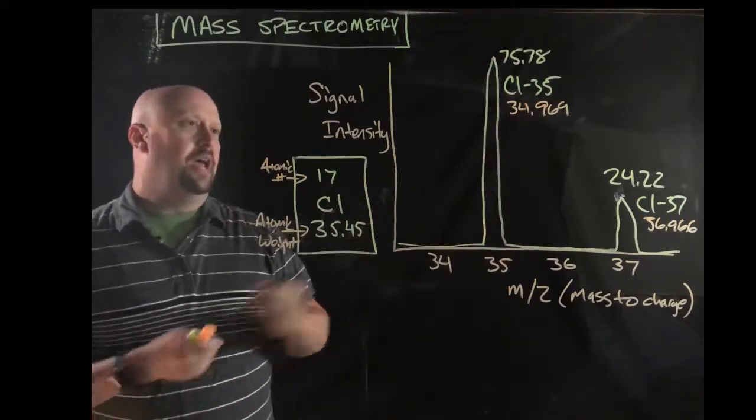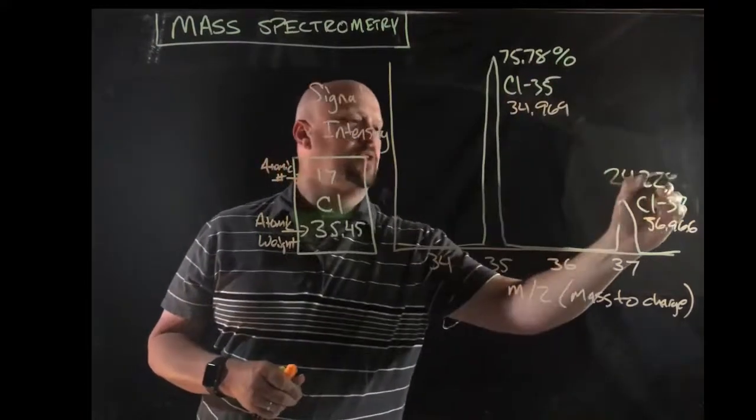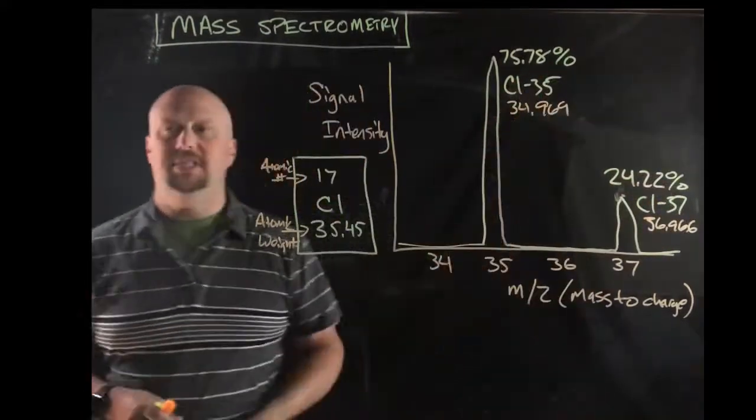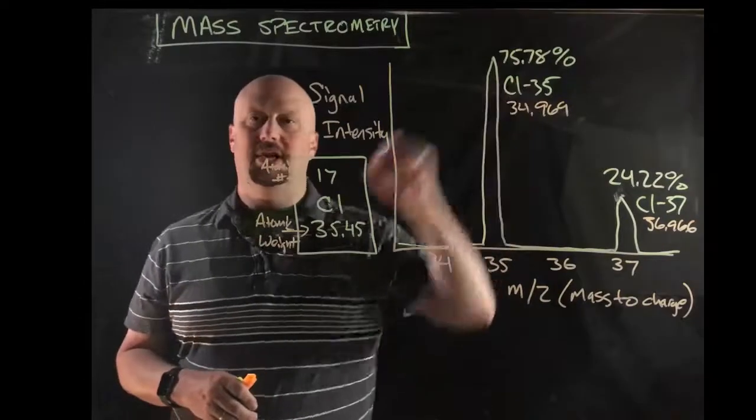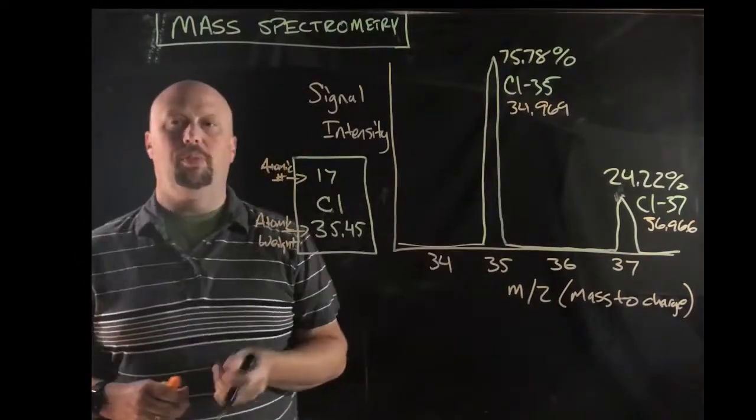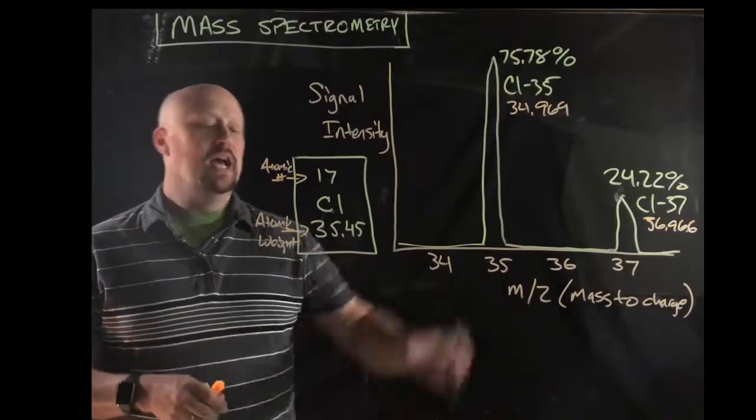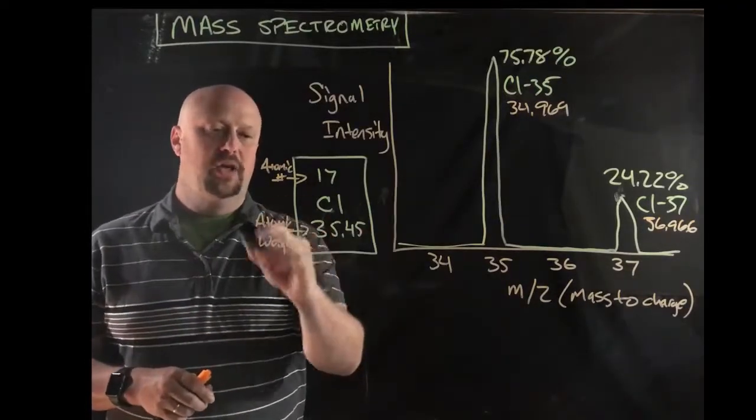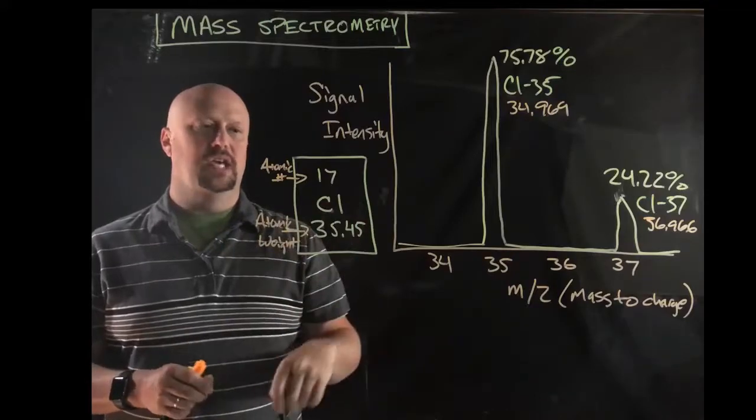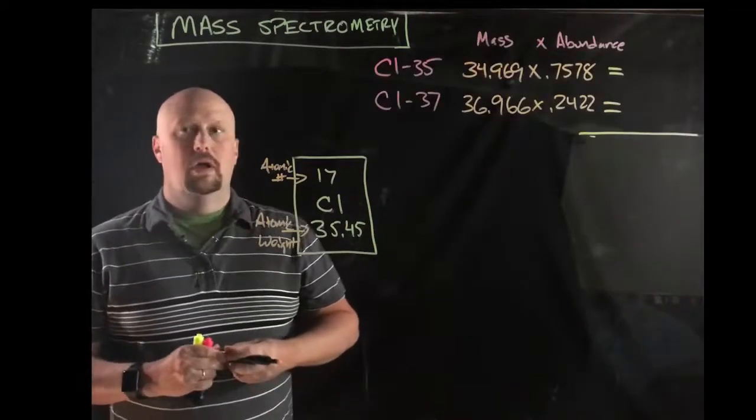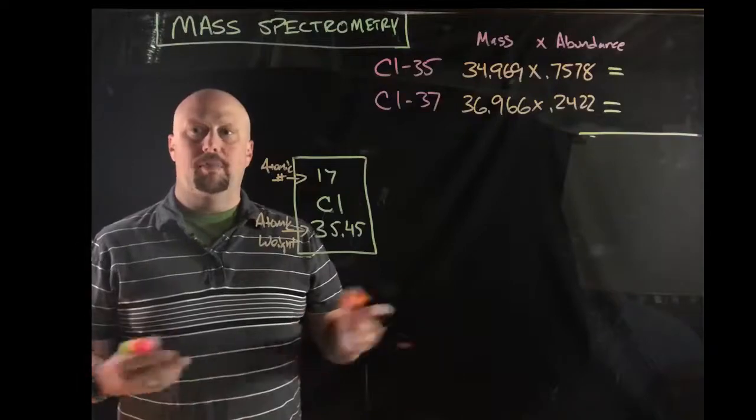Remember that, essentially, like in reality, these would be percents right here. That about 75.78% of it was the 35 isotope. About 24.22% of it was the 37 isotope. We're going to use that to essentially come back to this number here, which is the atomic weight that we would be looking for. So let's talk about the math.